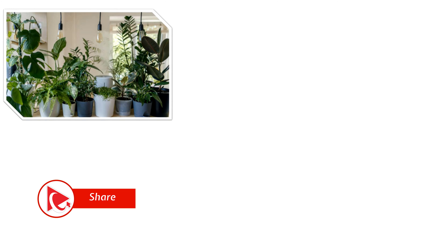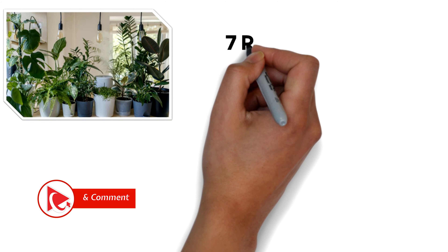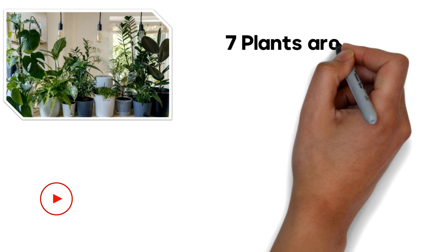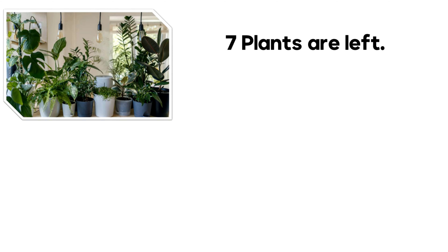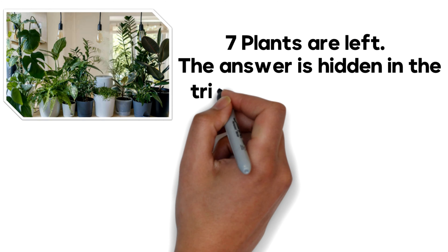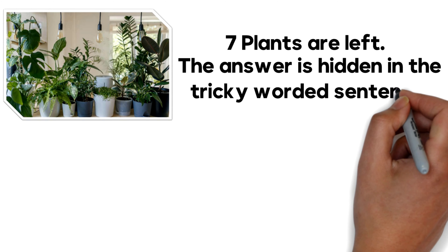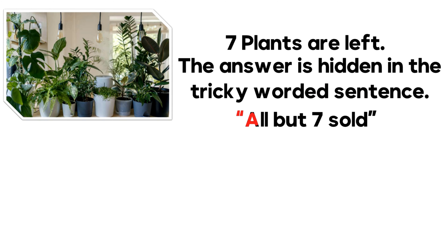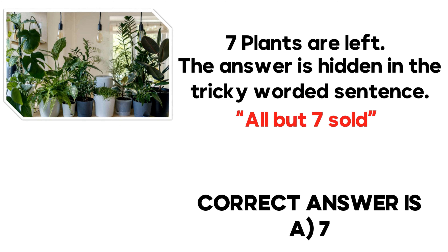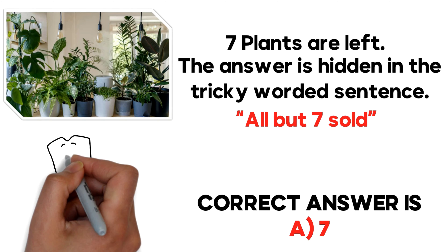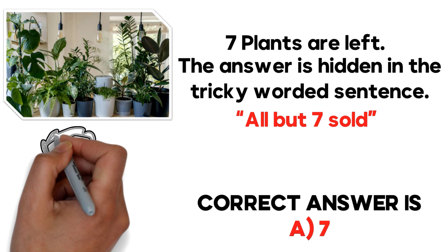The answer is very simple: seven plants are left. The answer is hidden in the tricky wording of the sentence — 'all but seven were sold.' So the correct answer is choice A, seven. Hopefully you read this question correctly, understood it well, and solved it on your own.